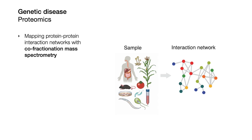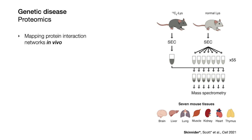One very appealing property of co-fractionation is that it can be applied to essentially any sample. Unlike conventional methods that take place in genetically modified cell lines or in yeast cells, co-fractionation can work under physiological conditions, even in complex tissues. The main goal of my PhD thesis was to use co-fractionation mass spectrometry to map the protein interaction networks in living mammalian tissues for the first time.